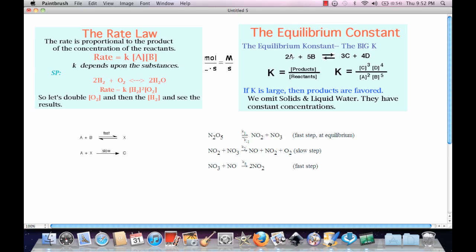Now the equilibrium constant is a little bit more different. The equilibrium constant, the big K, or the K constant, is equal to the products divided by the reactants. So what we do is we take this, right? We take the products right here. So C3, D4, A2, 5B.